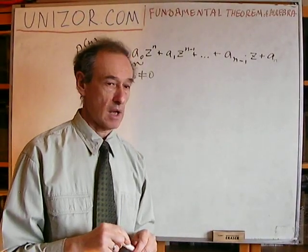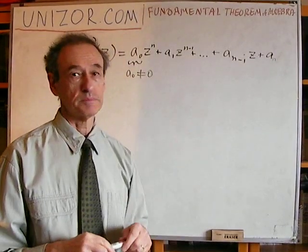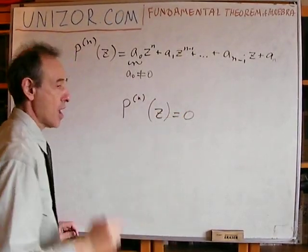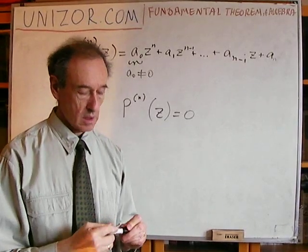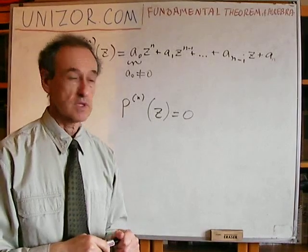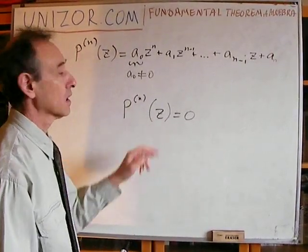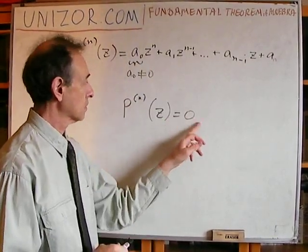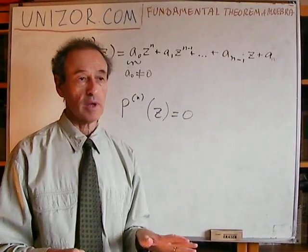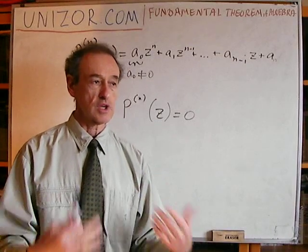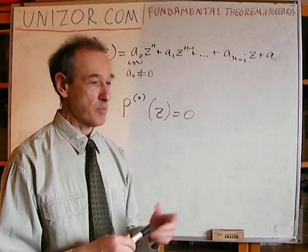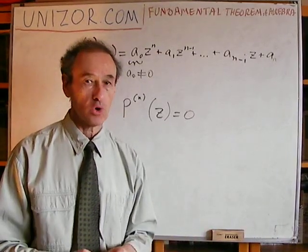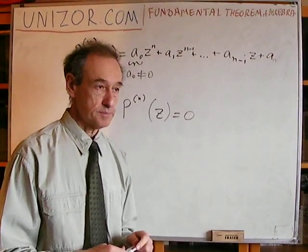So the fundamental theorem of algebra says that this polynomial, if used in the equation, must have at least one complex solution. So the result is some complex number z which, if substituted, will result in zero. It's not an easy theorem, and this is one of those theorems which I am just stating without proving. Obviously, there is a ton of material about how to prove this particular theorem — it's just beyond the scope of this particular course.